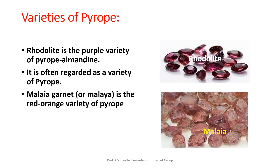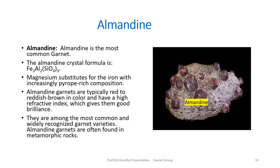The varieties of pyrope include rhodolite, the purple variety of pyrope-almandine, and malaya garnet, the red-orange variety. Coming to almandine, it is the most common garnet with formula Fe3Al2(SiO4)3. Magnesium substitutes for iron with increasingly pyrope-rich composition. Almandine garnets are typically red to reddish brown in color, with a high refractive index giving them good brilliance. They are among the most widely recognized garnet varieties and are often found in metamorphic rocks.